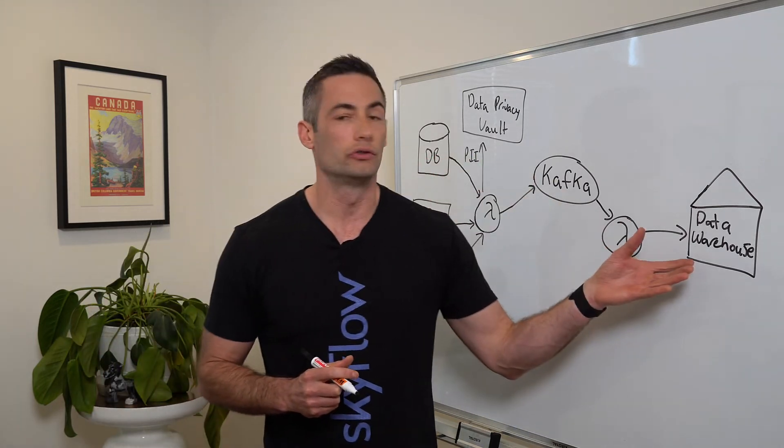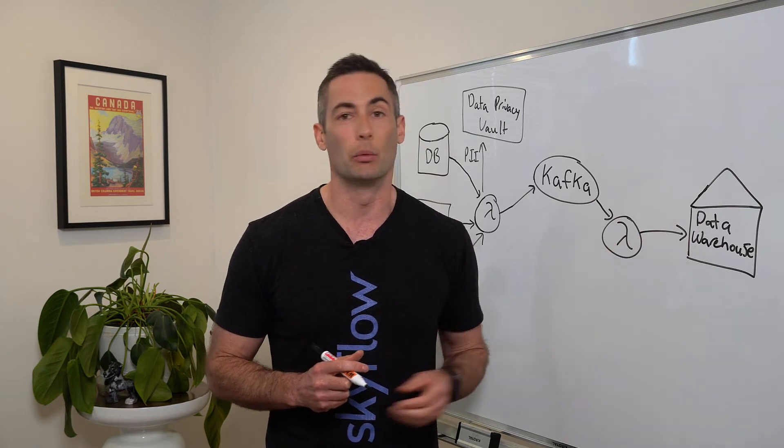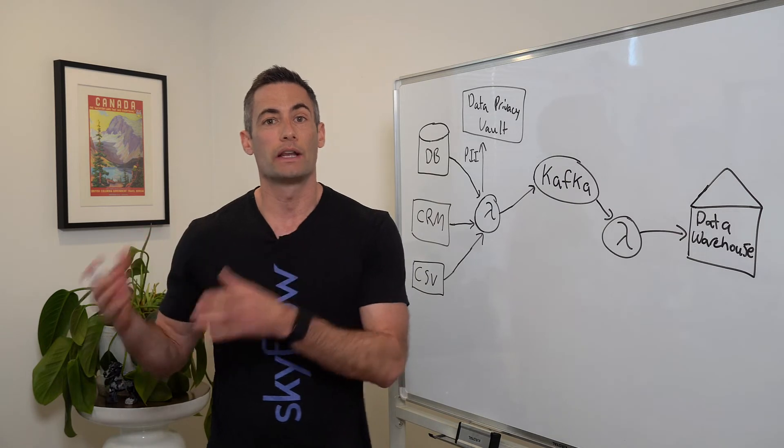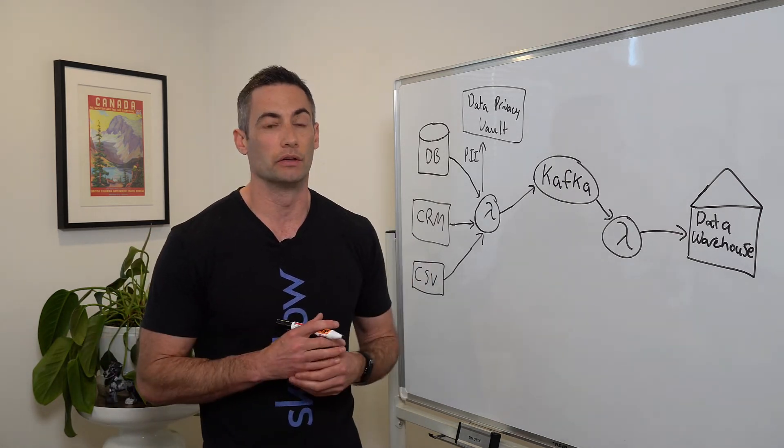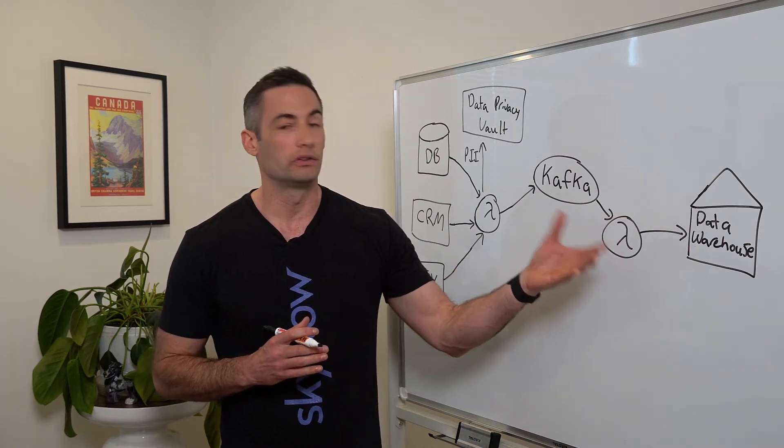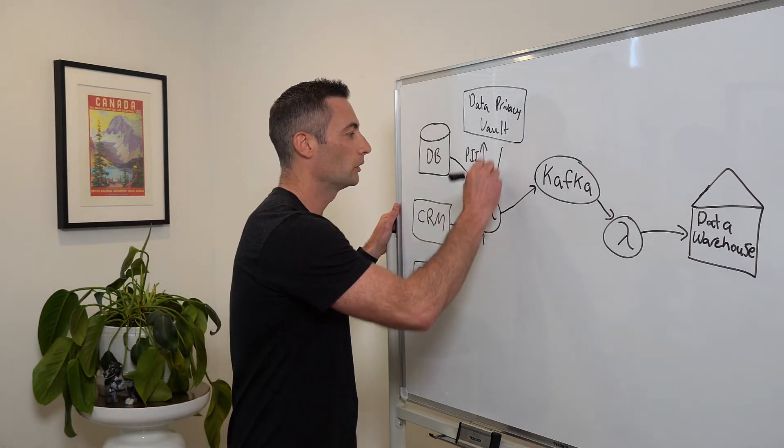Now, we also need to store some representation of the customer data in the data warehouse because the schema for the data warehouse already has things like names and email addresses and phone numbers defined within it. And we don't want to break the existing infrastructure or any of the dependencies on it.